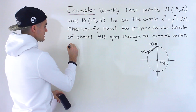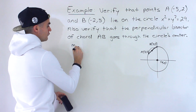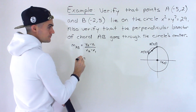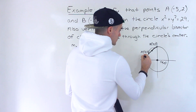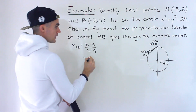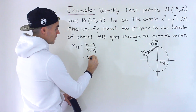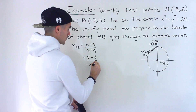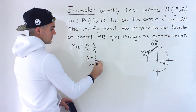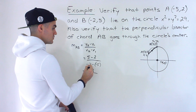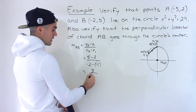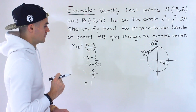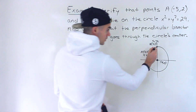The first step is to find the slope of chord AB using Y2 minus Y1 over X2 minus X1. Labeling negative 5, 2 as X1, Y1 and negative 2, 5 as X2, Y2, we get 5 minus 2 over negative 2 minus negative 5, which is 3 over 3, giving a slope of positive 1.